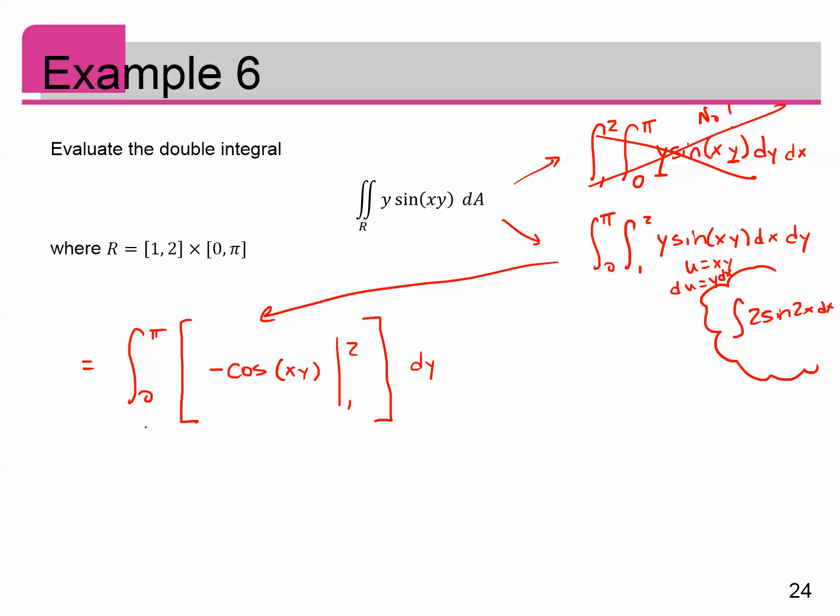You might pause the video and make sure you understand why that integral right there of Y sine of XY, when you treat Y as a constant and integrate over X, gives you this. And then I'll leave the outside integrals in place. Okay. So now plug in your limits. So I get negative cosine of 2Y minus, minus is plus cosine of Y, DY.